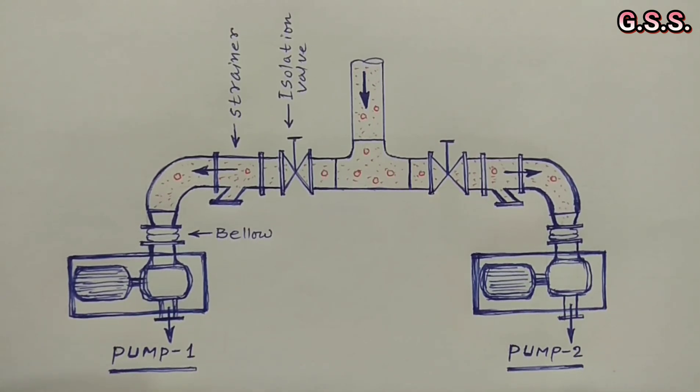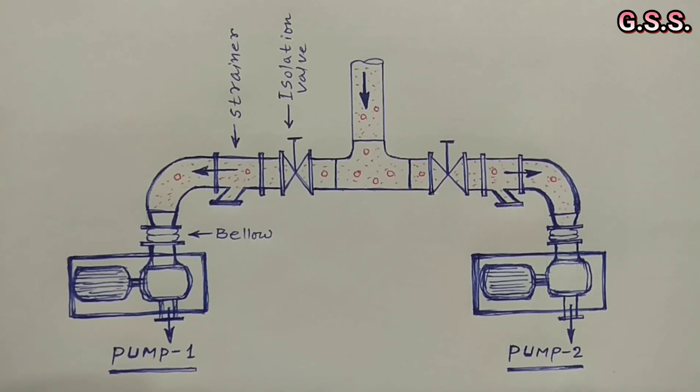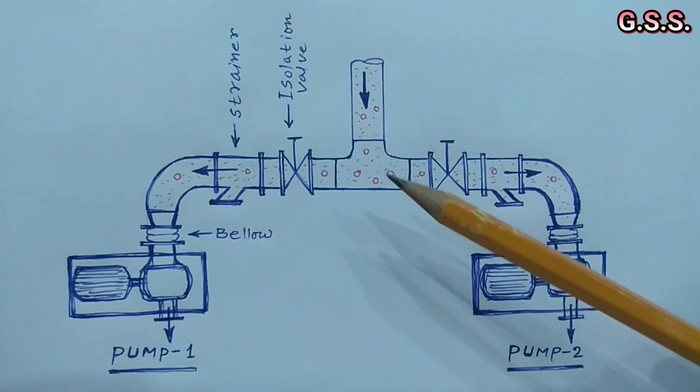To have equal flow distribution and same pressure drop, normally suction piping is made symmetric from this T point.